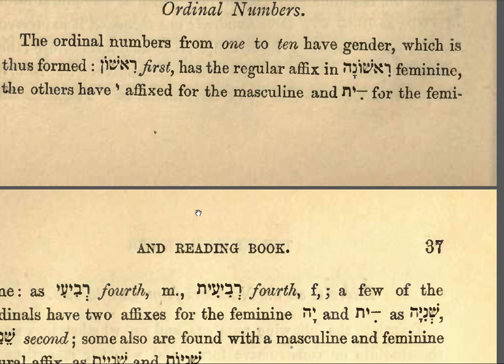The ordinal numbers. The ordinal numbers from 1 to 10 have gender, which is formed in this way.